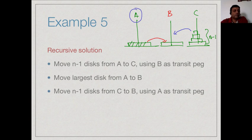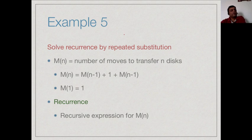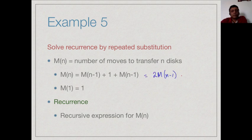Let M(n) denote the number of moves needed to transfer n disks. To transfer n disks we transfer n-1 disks (M(n-1) moves), move one disk (1 move), then transfer n-1 disks again (M(n-1) moves). So M(n) = 2·M(n-1) + 1, with base case M(1) = 1. This recursive expression for M(n) in terms of smaller values is called a recurrence. We now need to solve it.